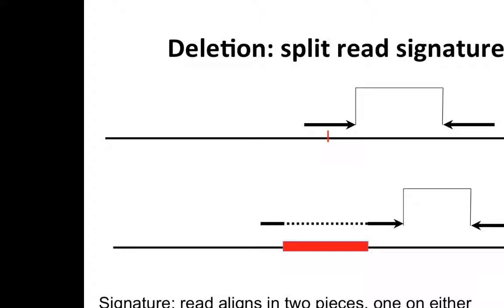Another signature that doesn't use paired orientation is split reads. BWA will try to introduce small gaps when aligning reads — if deletions are small enough, it might align one part of the read before the breakpoint and the other part after the breakpoint, resulting in a read with a long gap, which may also indicate a deletion. Most structural variation callers use both split read signatures and paired-end orientation and insert sizes jointly to look for evidence of structural variation.